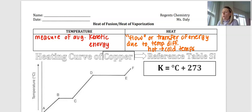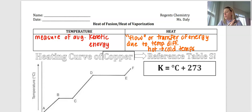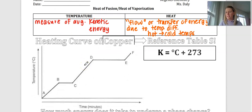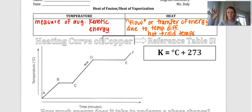We've talked a lot about the heating curve of water over the past couple of days, so I wanted to use a different example — the heating curve of copper. As you can see, it looks very similar to the heating curve of water. Almost all heating curves are going to follow this general pathway, though they might vary slightly in the time spent in each phase.